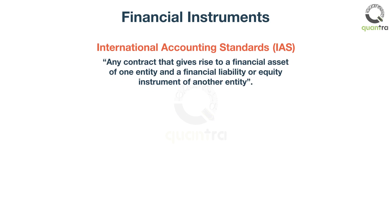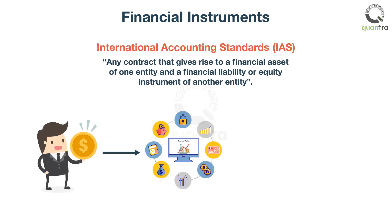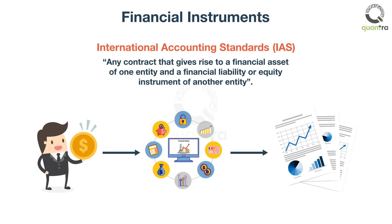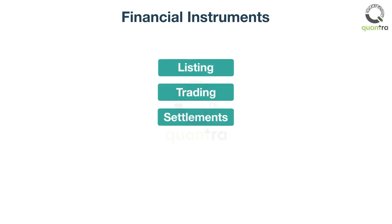The primary purpose of financial instruments is to provide efficient flow and transfer of money between providers of capital — that is, investors — and those who need capital, that is, firms. These instruments are created by listing entities, traded on by investors and traders, and settled by clearing agencies. You will learn this process in detail in the upcoming section.